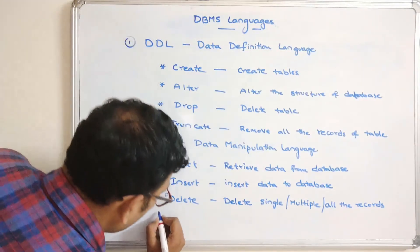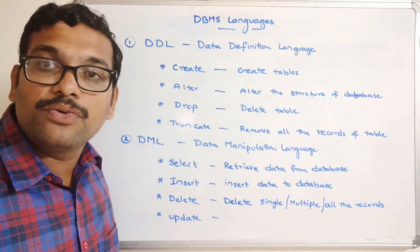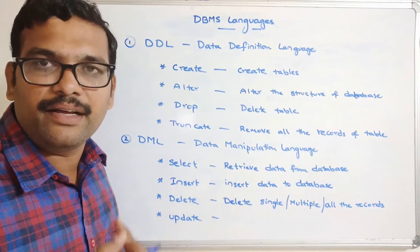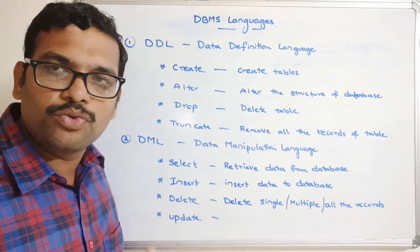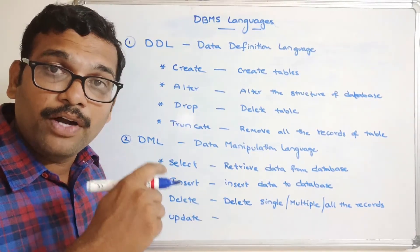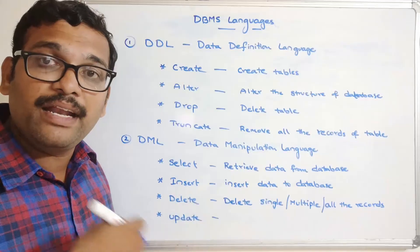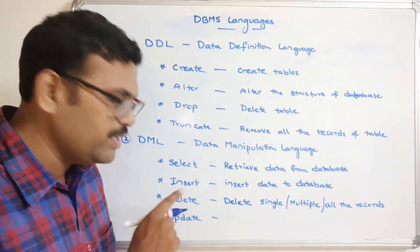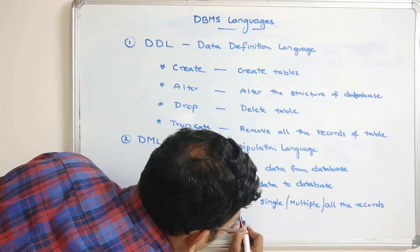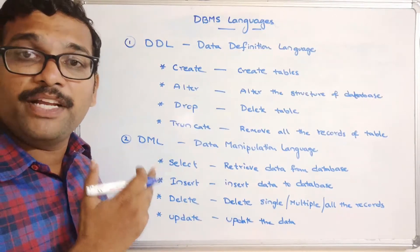The next DML command is UPDATE, which is used to update the data — not the structure. For example, in a student table, if you want to update a student's percentage value, you use the UPDATE command to modify the value of an attribute.